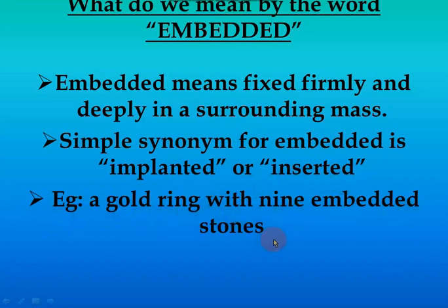An example: 'a golden ring with nine embedded stones' — that gives the idea that embedded means to insert little things into a bigger one. Embedded means to fix firmly, meaning it does not change or move under little environmental conditions — it is strong and deeply fixed in a surrounding mass.